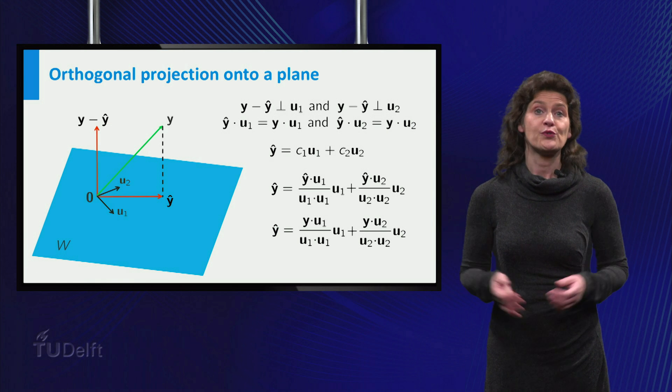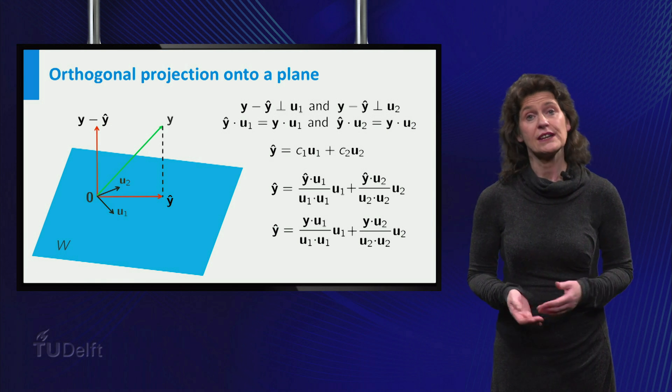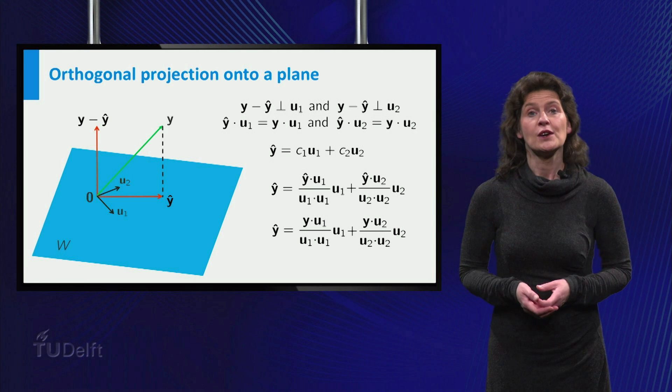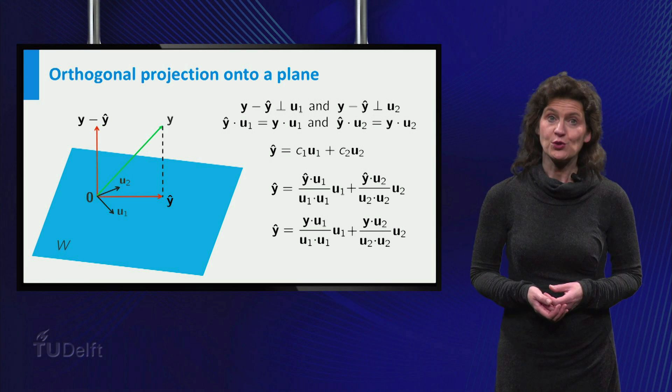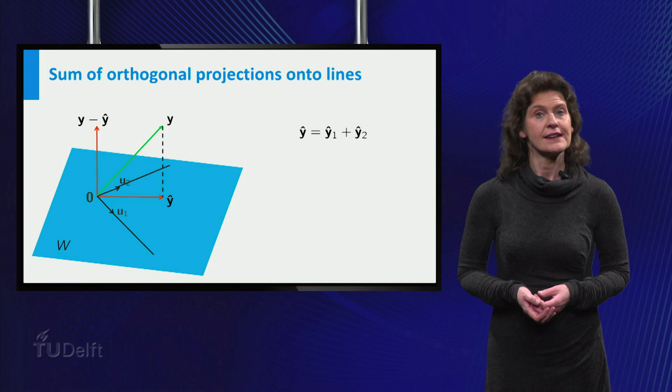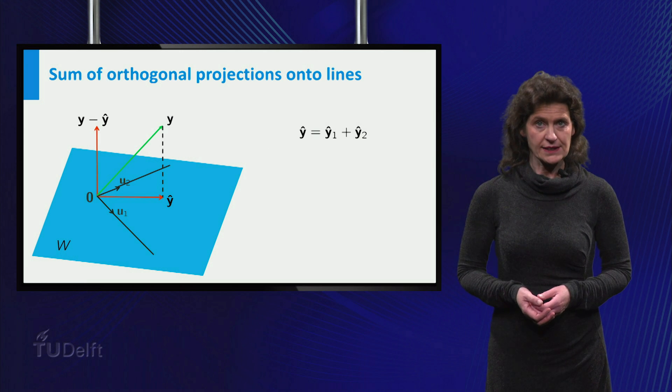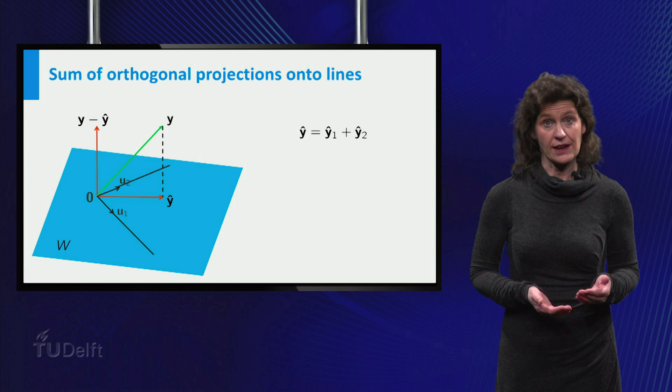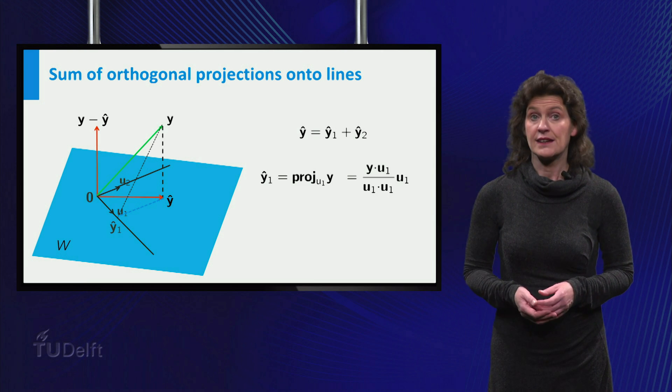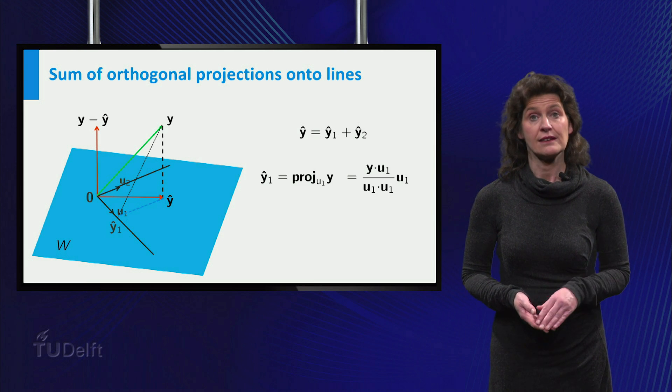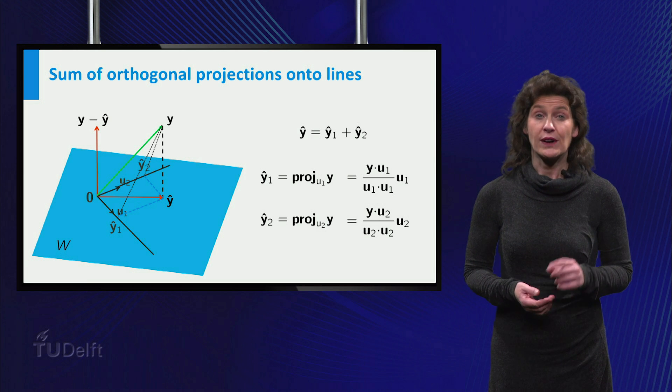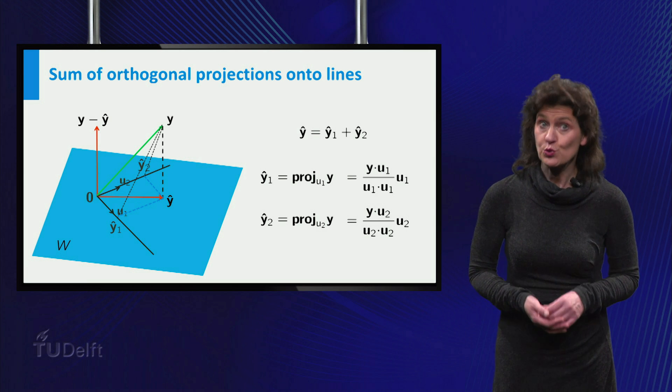So, you found ŷ as a linear combination of u1 and u2 with weights that you can compute by using the original vector Y. In other words, ŷ is the sum of the projections of Y onto the lines spanned by u1 and u2, where orthogonality of u1 and u2 is crucial.